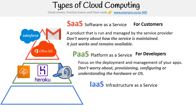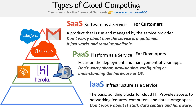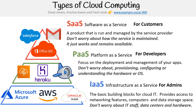At the bottom, we have Infrastructure as a Service, or IaaS. This is the basic building blocks of cloud IT — it provides access to networking features, computers, and data storage space. You don't worry about IT staff, data centers, or hardware. This is the true focus of our course. The key point about this pyramid is that infrastructure as a service can have Platform as a Service and Software as a Service on top of it. Examples of infrastructure as a service would be Microsoft Azure, AWS, or Oracle Cloud. This is really intended for administrators.